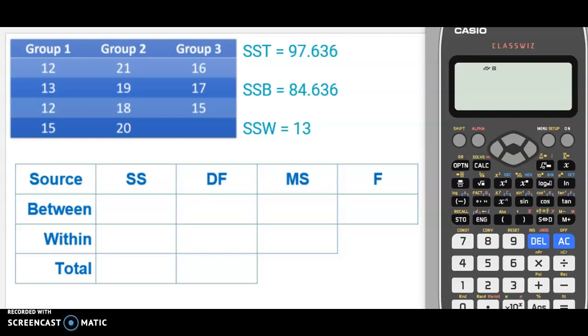SSB, which is 84.636, is our sums of squares between, and that means our sums of squares between the levels of the factor. So in this case, it's between the groups.